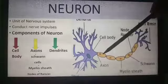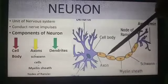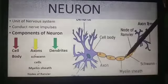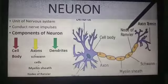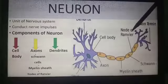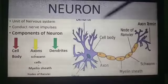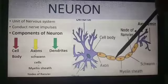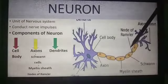Between the Schwann cells there are some non-myelinated areas — gaps between the myelin sheath. These non-myelinated areas are called Nodes of Ranvier, and impulses jump over the areas of myelin sheath, going from node to node.